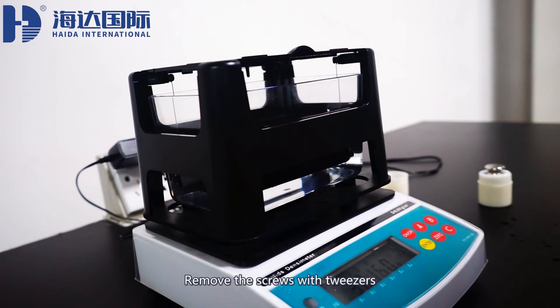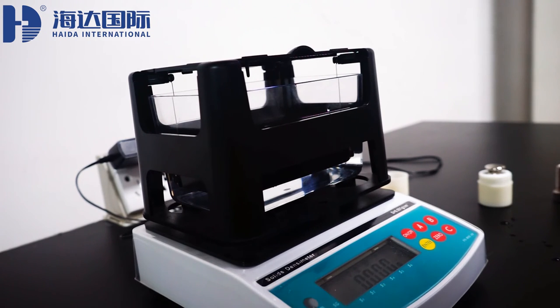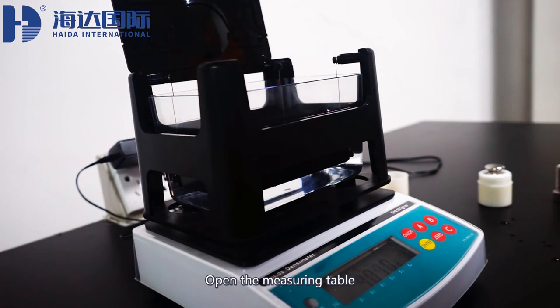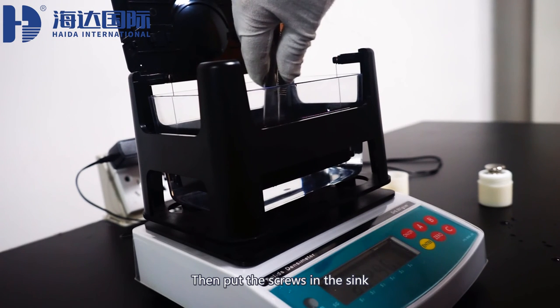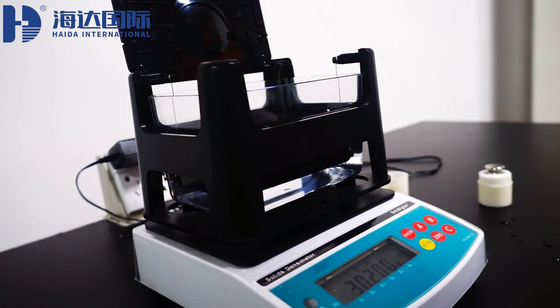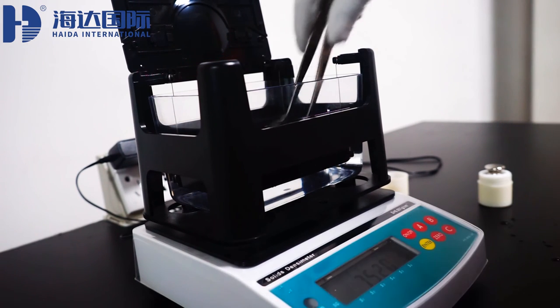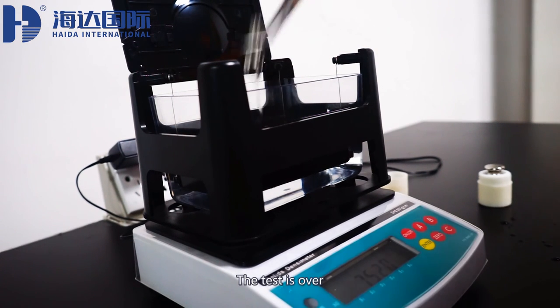Remove the screws with tweezers. Open the measuring table. Then put the screws in the sink. Click on the enter button. Sample density in real time.